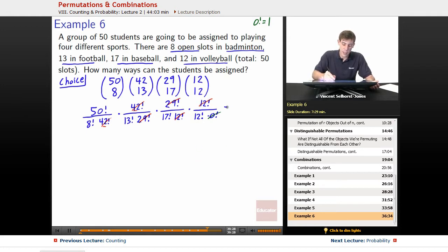So that leaves us in the end, 50 factorial on the top divided by 8 factorial times 13 factorial times 17 factorial times 12 factorial. So that is the total number of ways that we can put this out for all of our team assignments.